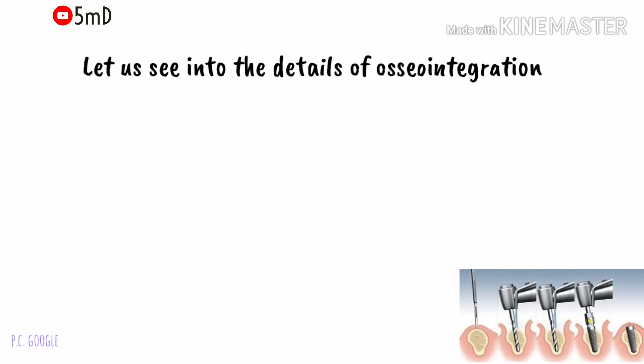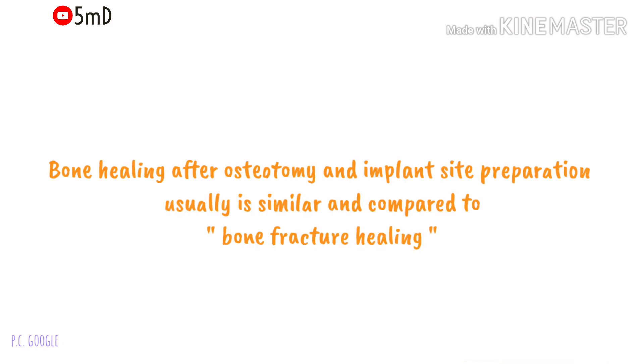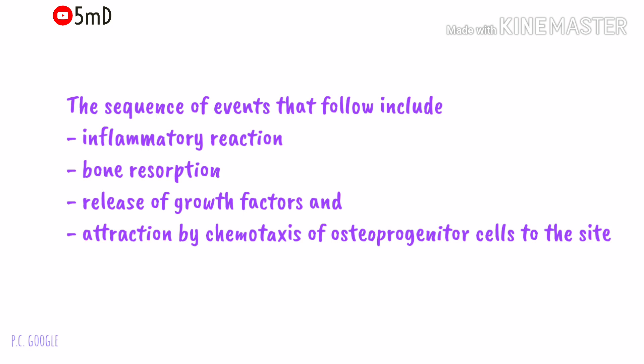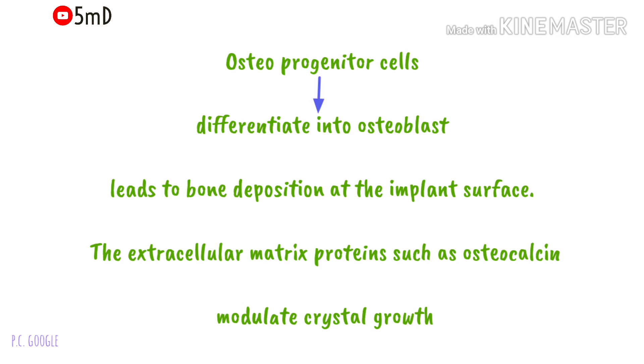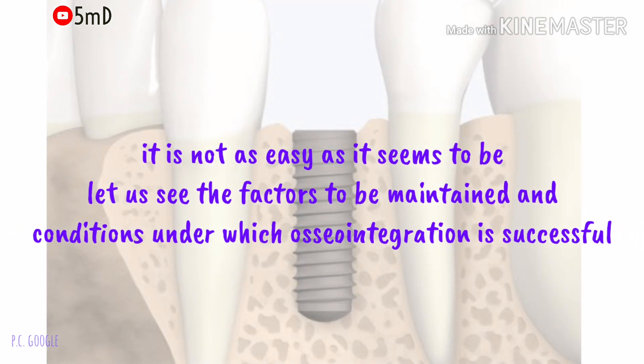How does bone heal after osteotomy and implant site preparation? The sequence of events can be compared to that of bone fracture healing. It includes inflammatory reaction, bone resorption, release of growth factors, and attraction of osteoprogenitor cells to the site by chemotaxis. These osteoprogenitor cells then differentiate into osteoblasts and deposit bone at the site. Extracellular matrix proteins like osteocalcin modulate the crystal growth.